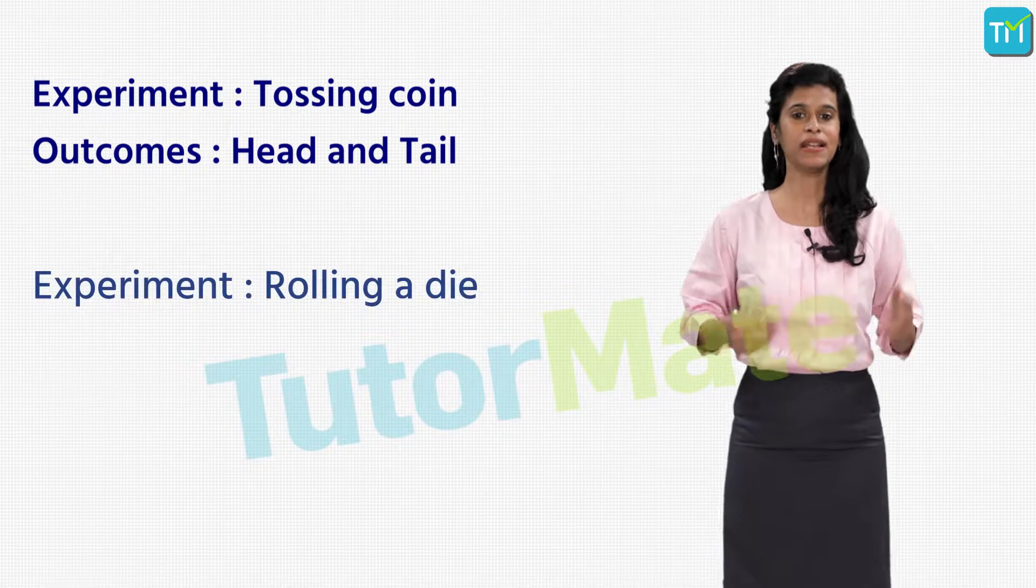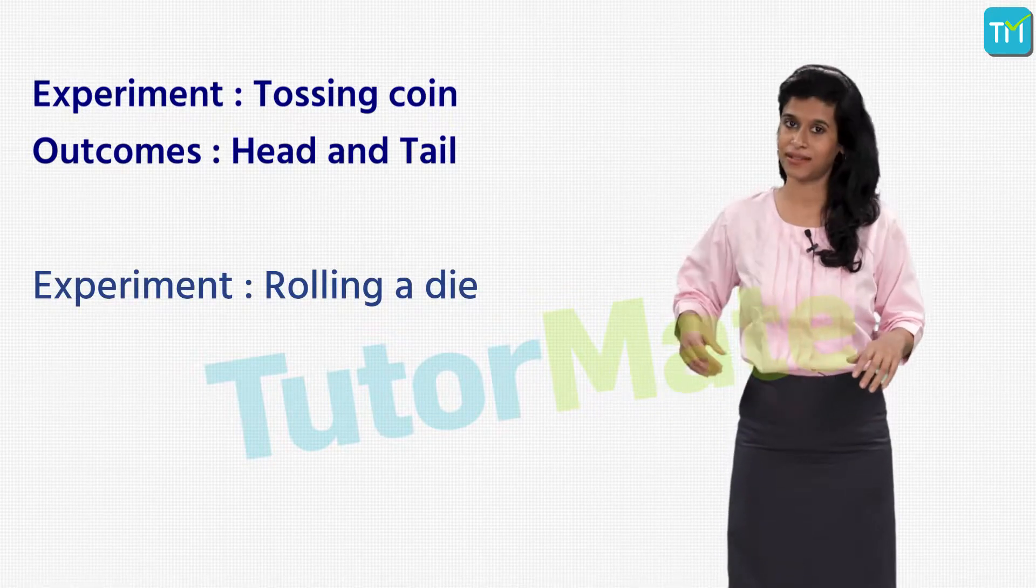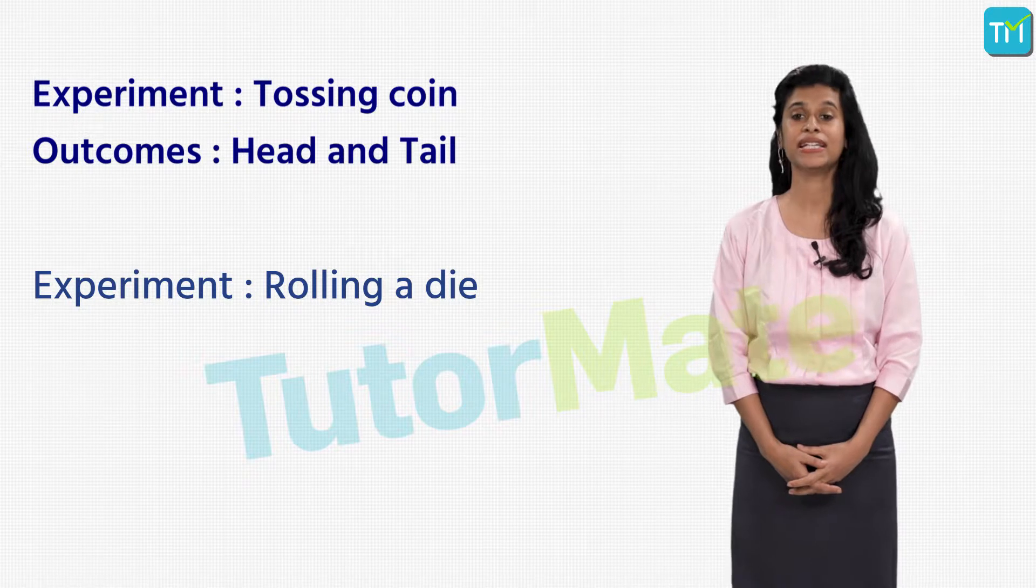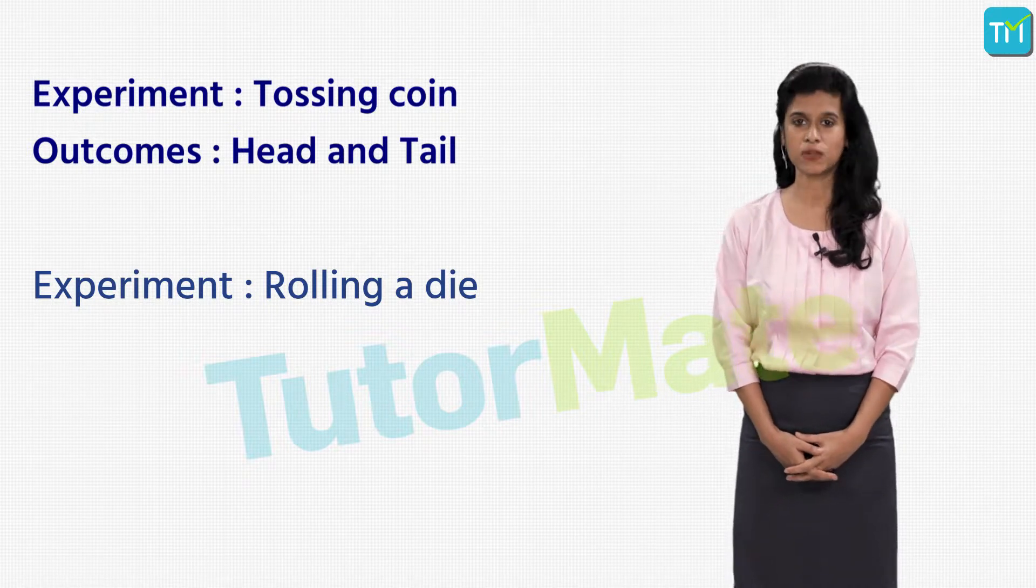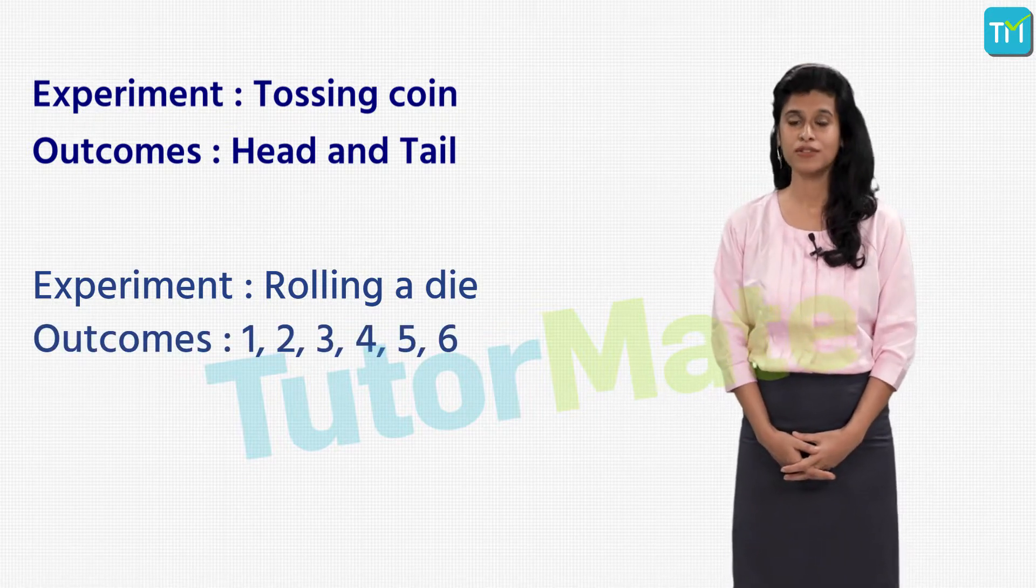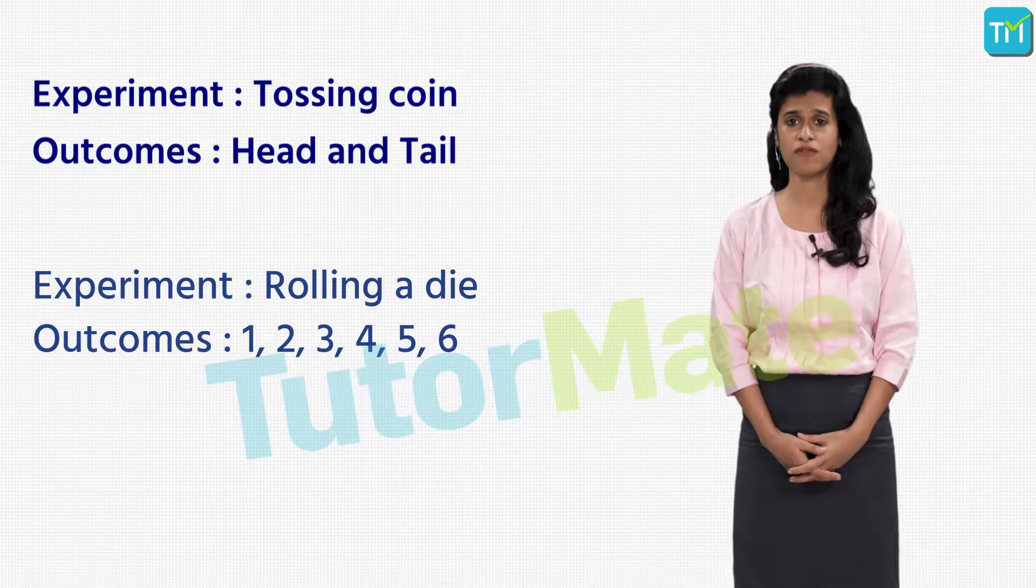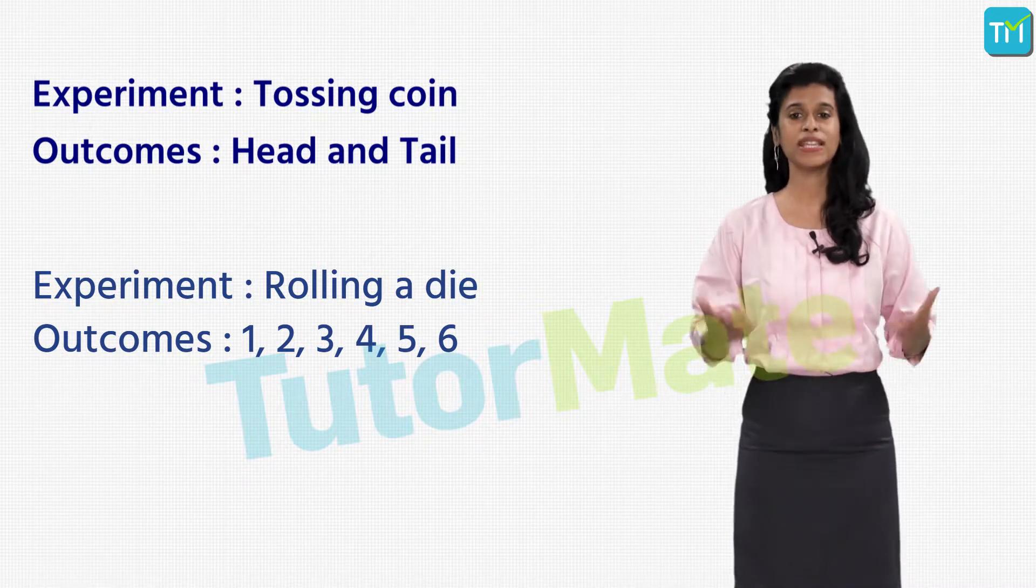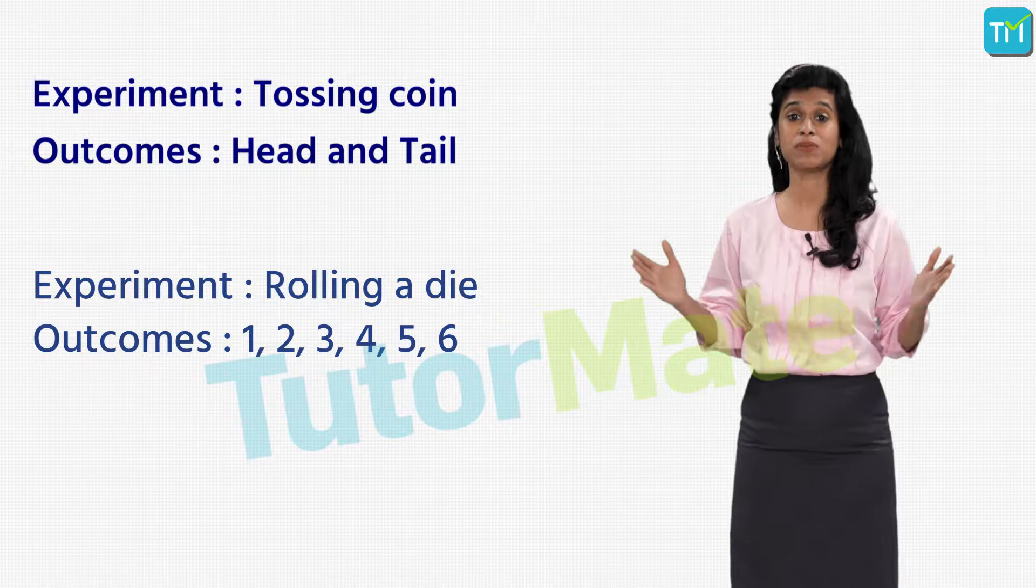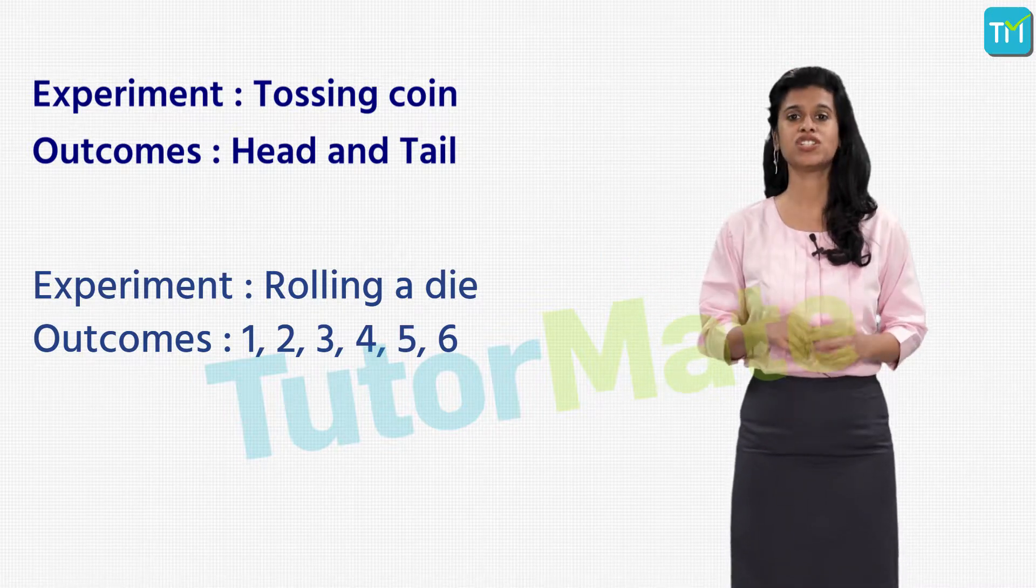Similarly, if we rolled a die, the experiment would be called rolling a die and the possible outcomes would be one, two, three, four, five, or six. So in this case, there are six possible outcomes out of which anyone can appear, right?